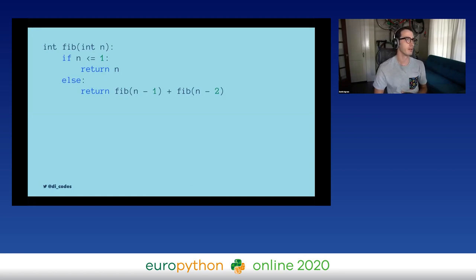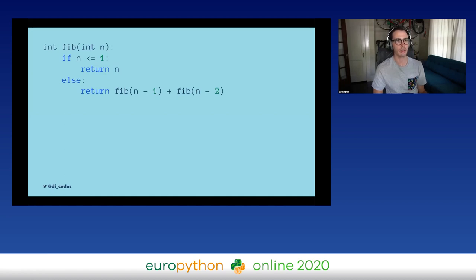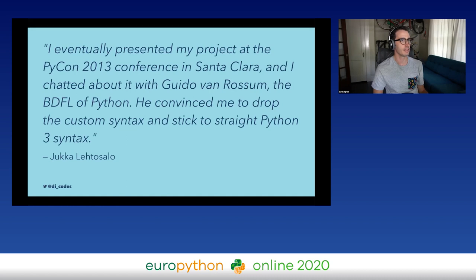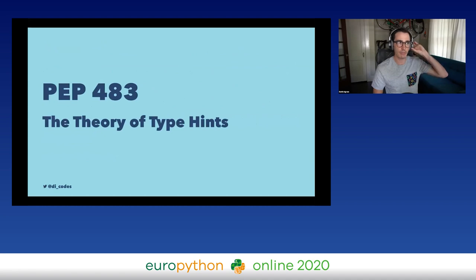The variant kind of looks like Python if you squint at it, but there's other stuff happening — like the function `fib` being declared as an integer and the argument type looking like a function annotation. It kind of looked like Python but wasn't Python — though you could compile it to Python. The issue was that even with function annotations, Python couldn't support everything necessary for static typing. He presented this at PyCon, talked to Guido afterwards, and Guido said: let's drop the custom syntax, drop the variant, and just do this in regular Python 3. MyPy also included a type checker for the variant, and that is what we think of as MyPy today — now modified to check Python itself.